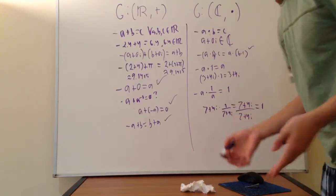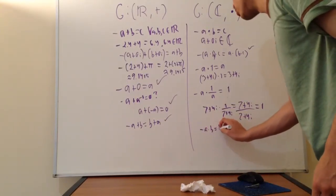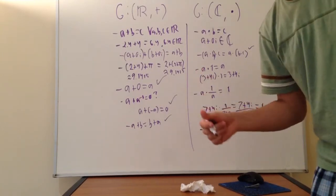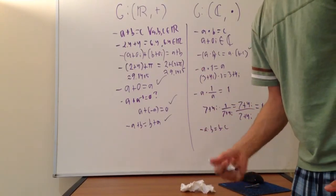It is commutative as well. We do have A × B = B × A. So the complex numbers are indeed also an abelian group under multiplication.